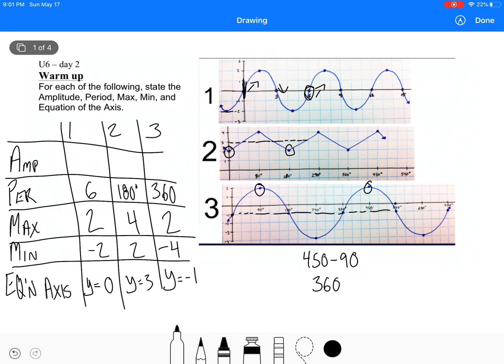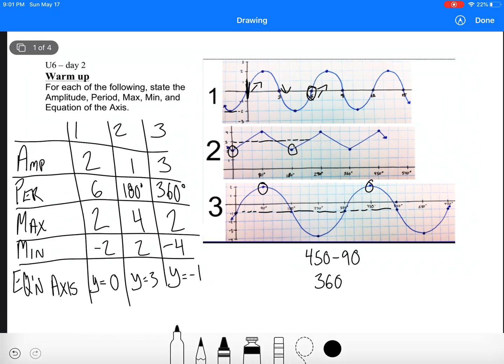So we have 450 minus 90 is 360. I think that's in degrees. And then our amplitude for the first one is just 2. From the equation of the axis to the top I'm doing. So I'm going from 0 to 2, from 2 to 3, and then from negative 1 to 2. So I just work from bottom to top there.